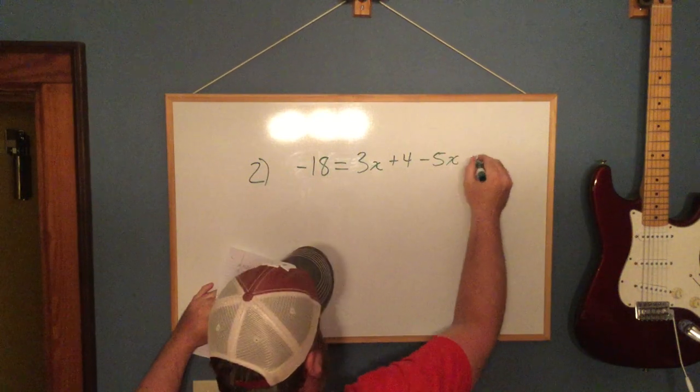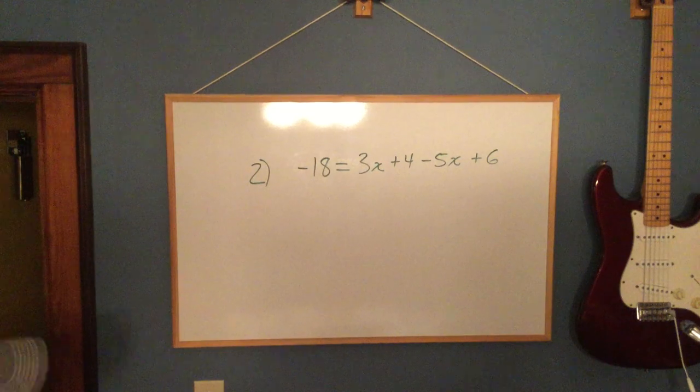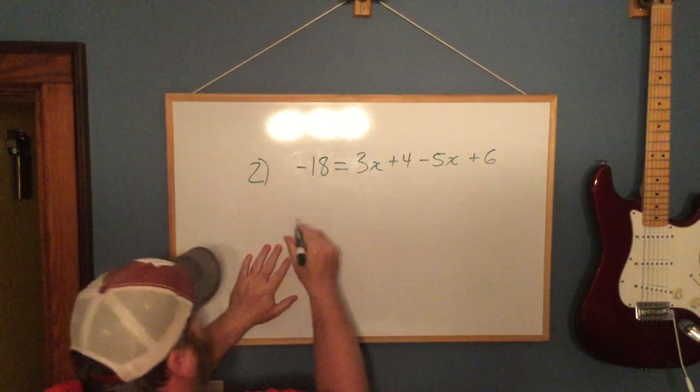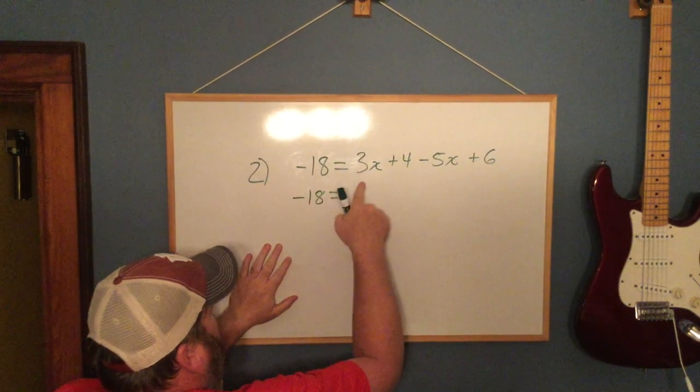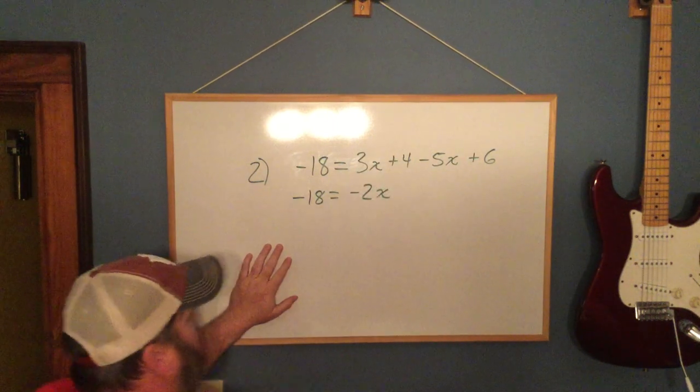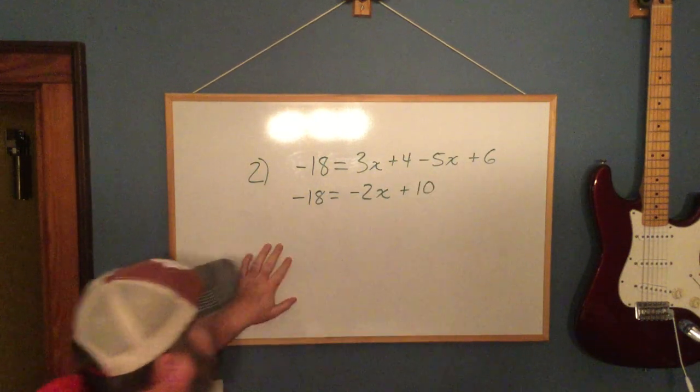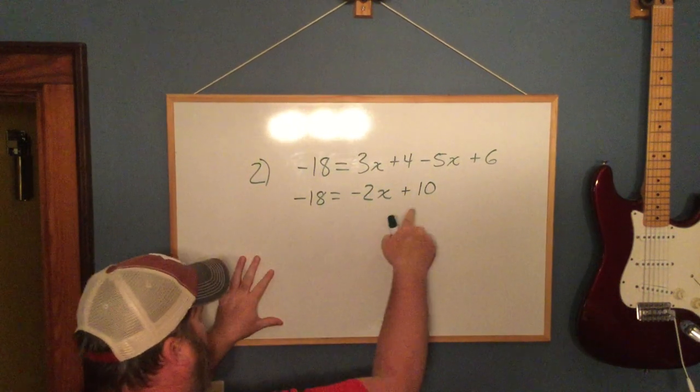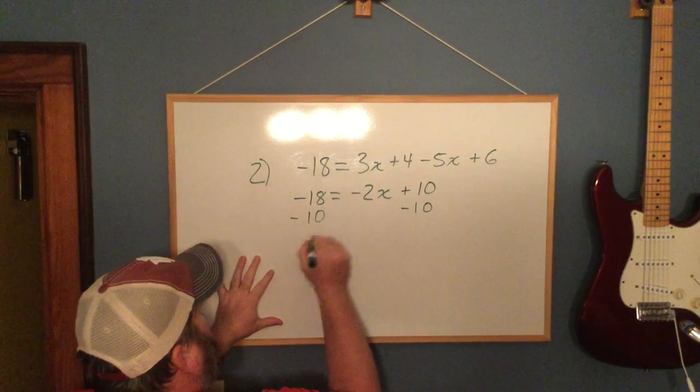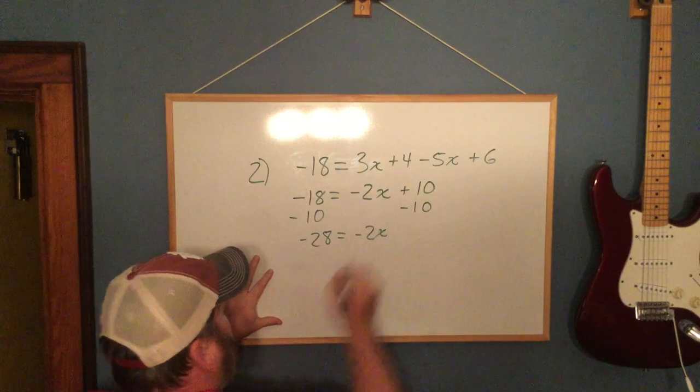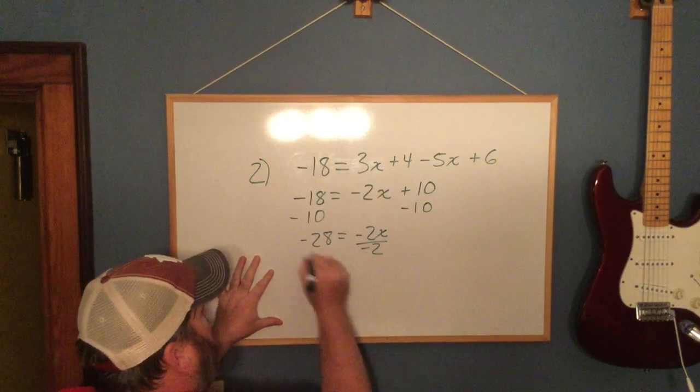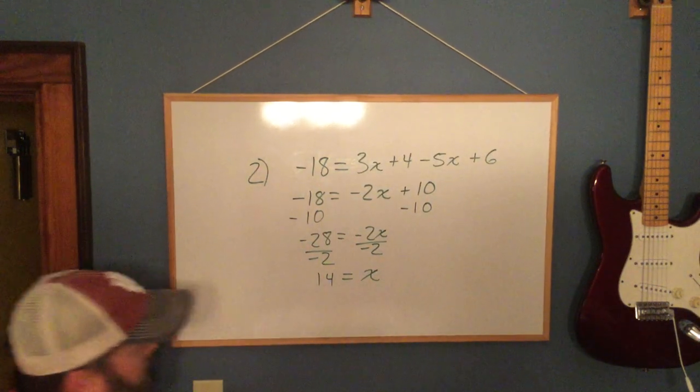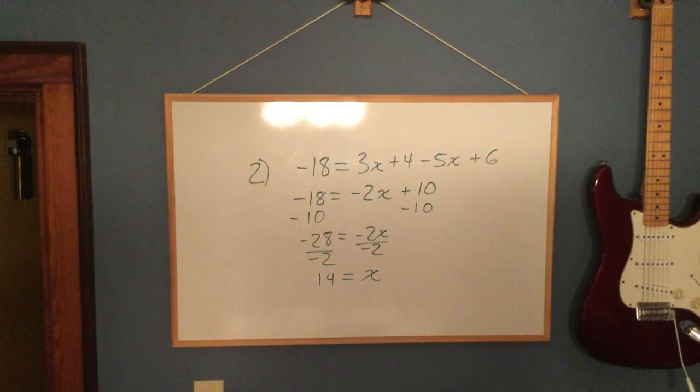Number 2: Negative 18 equals 3x plus 4 minus 5x plus 6. The left side is as simple as it can get. The right side has terms with variables and constants, so we've got a lot of combining to do. 3x and negative 5x combine and make negative 2x. 4 and 6 make plus 10. So now both sides are as simple as they can get. I'm going to subtract 10 from both sides. I have negative 28 equals negative 2x. Divide both sides by negative 2. Negative over negative is a positive, so I get 14.